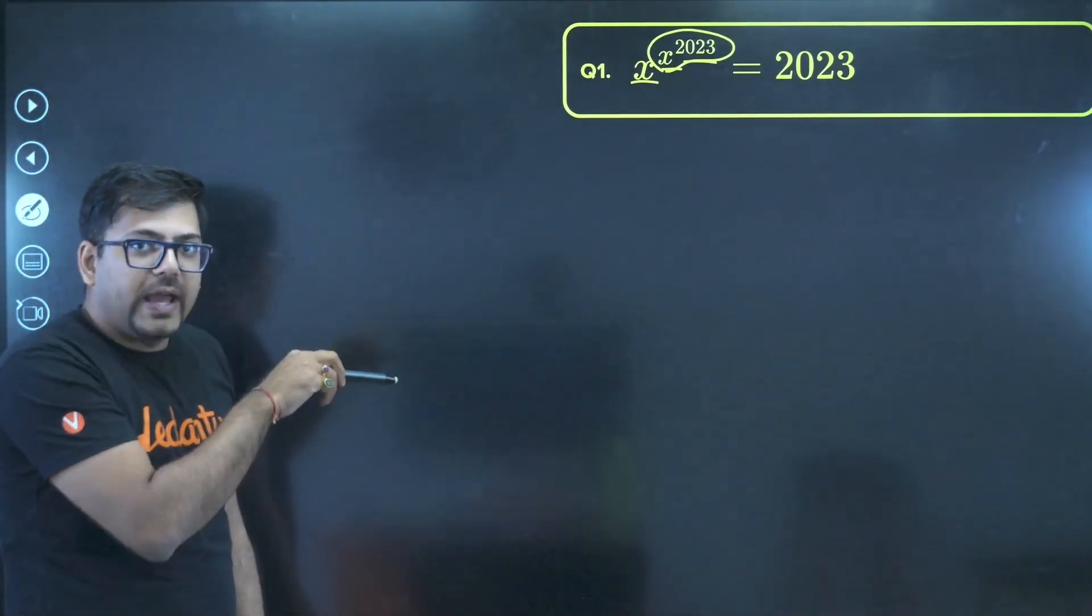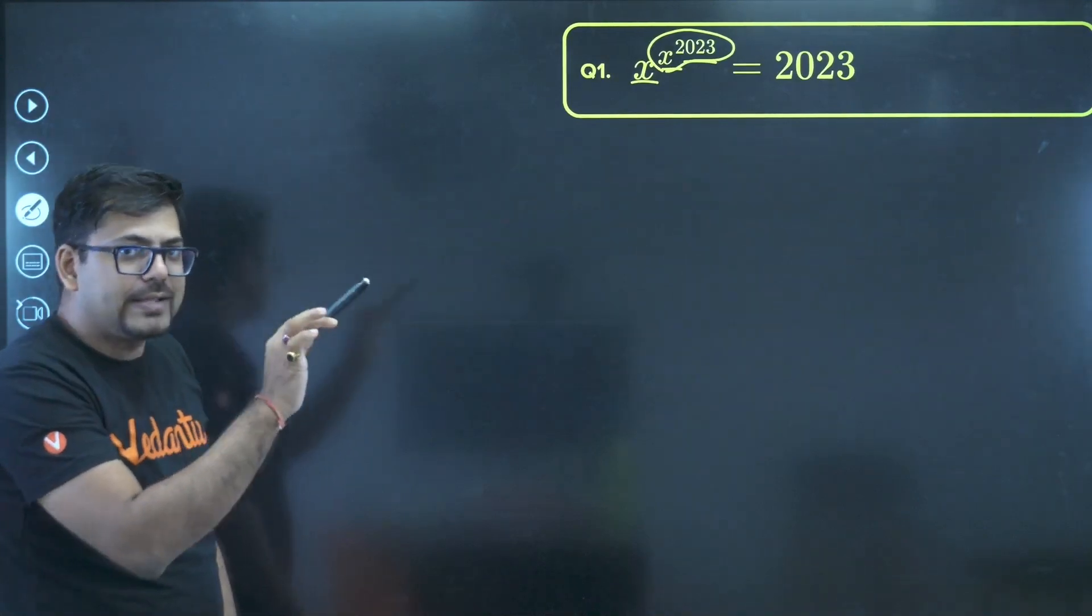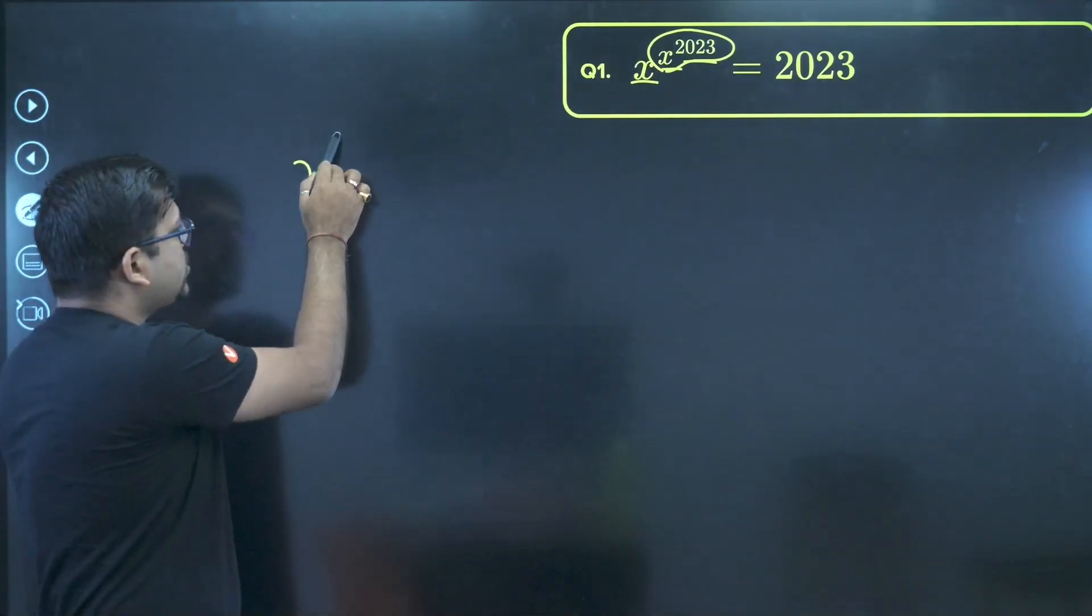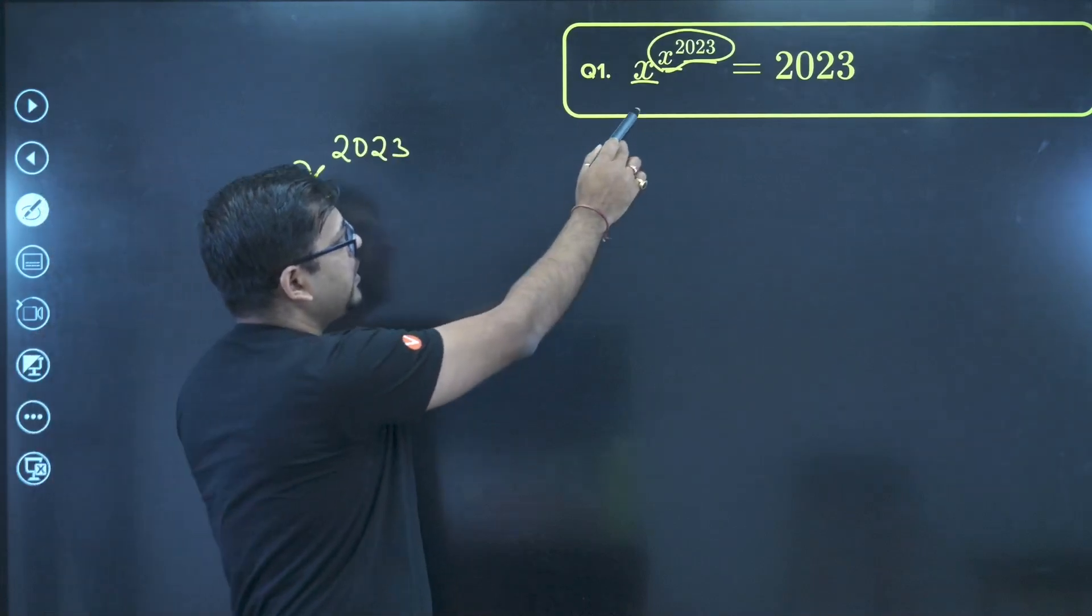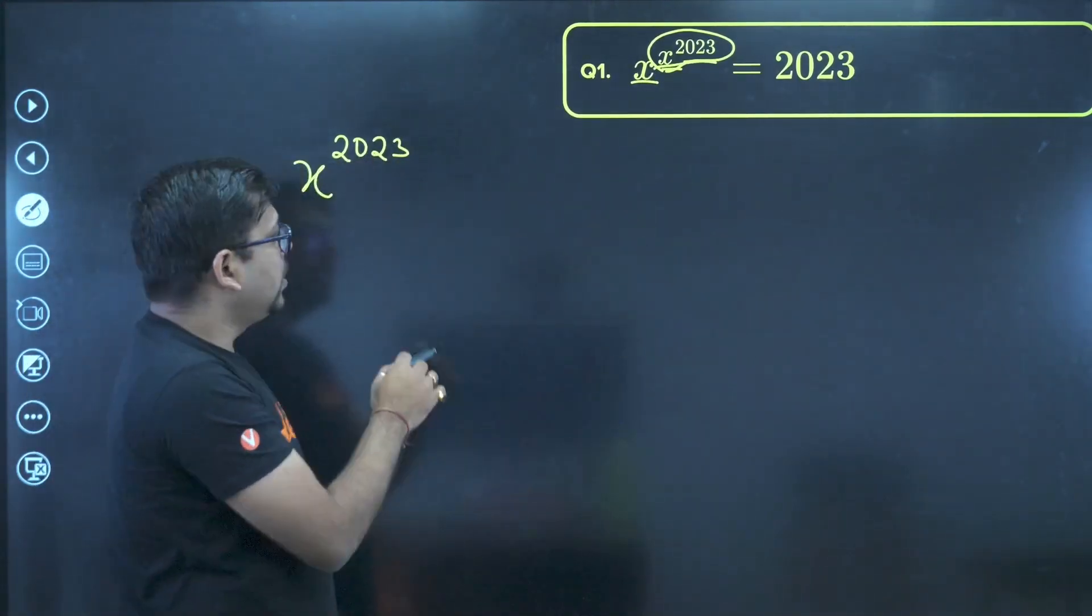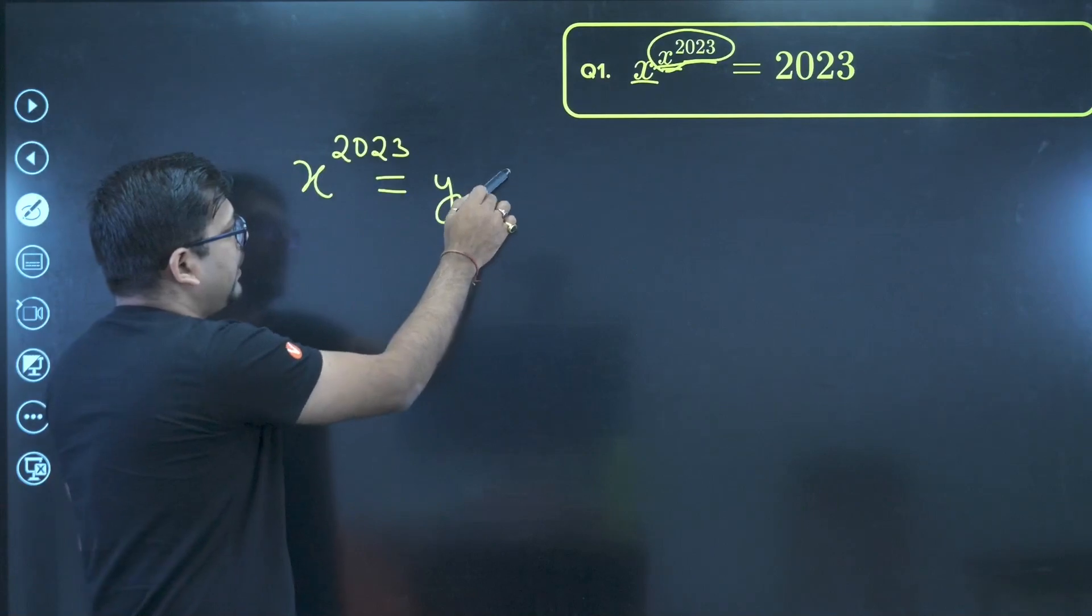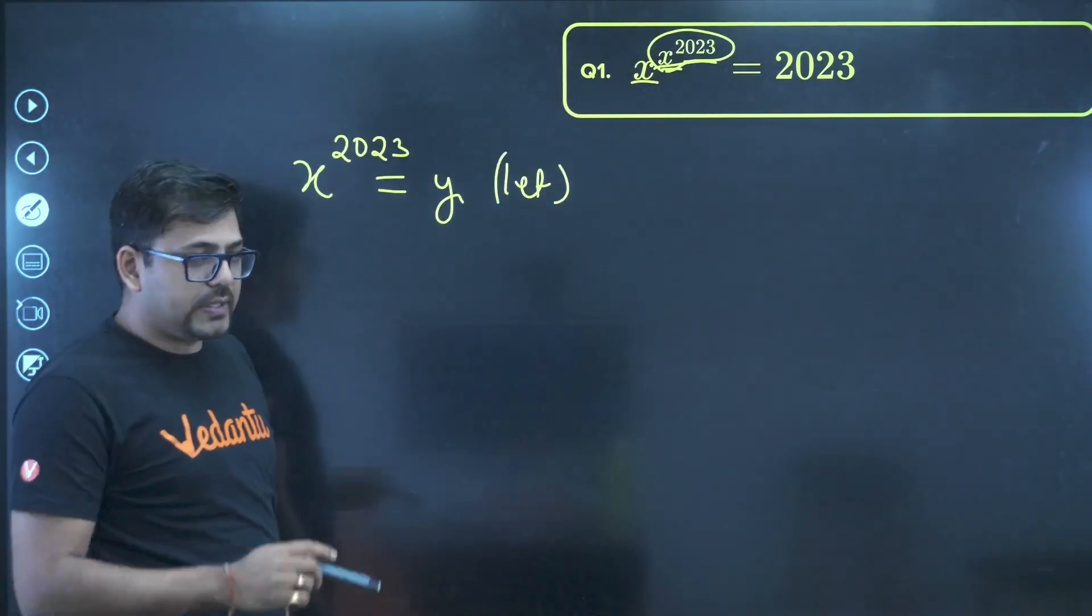First of all, assume x raised to power 2023 as some other variable. So x raised to power 2023, this entire exponent term, I am assuming this to be y. Let's suppose that this is y. Now once we have done this,